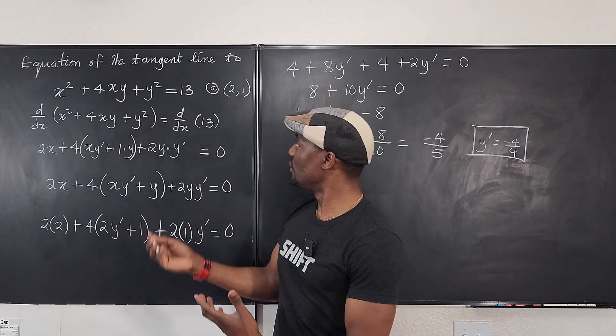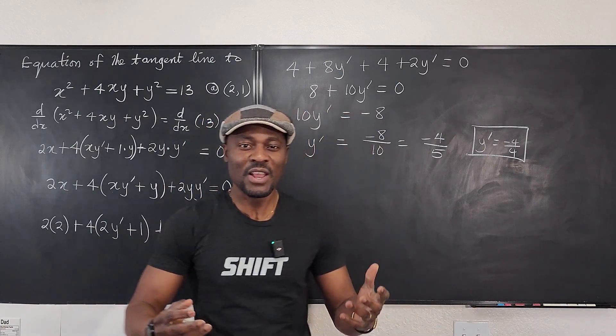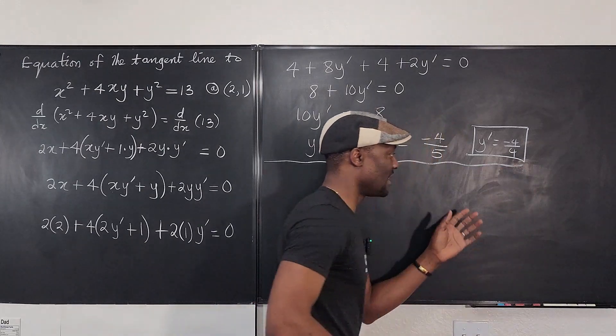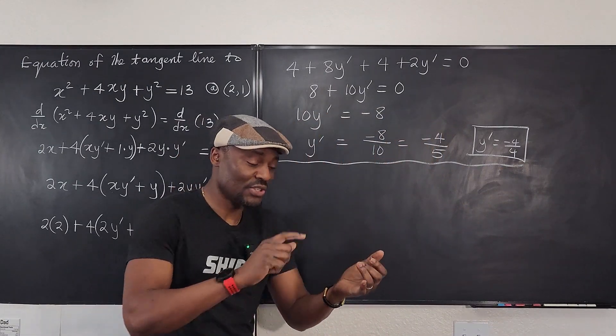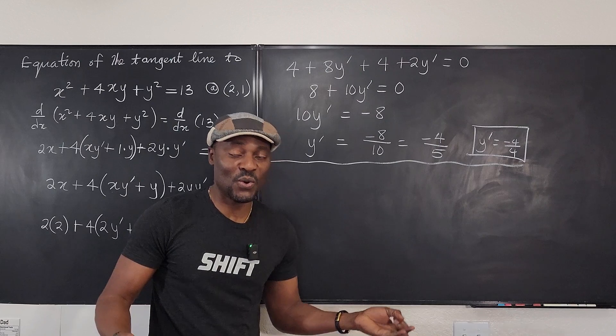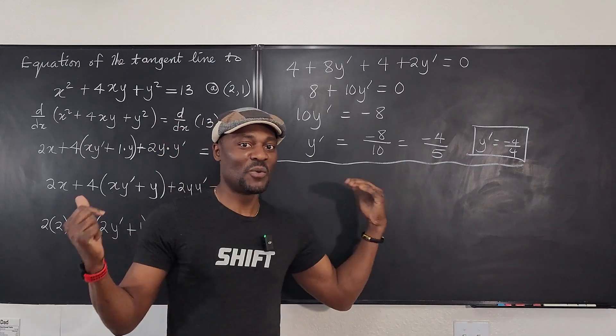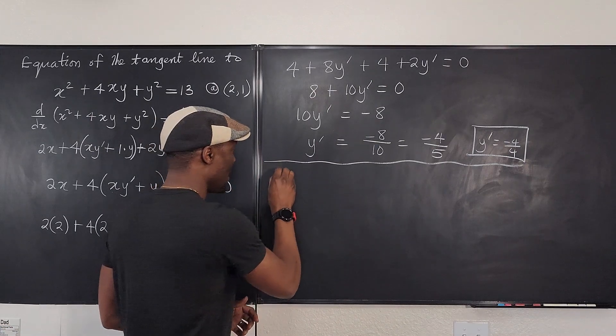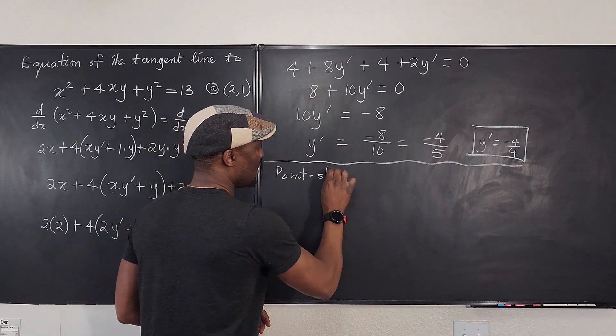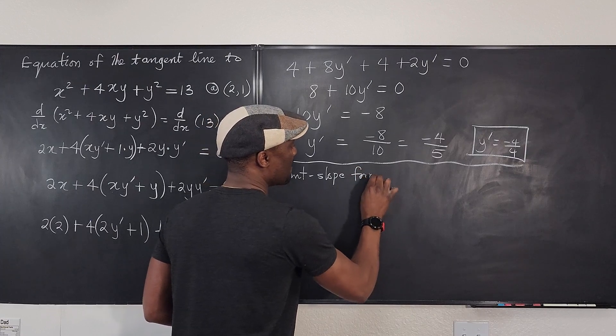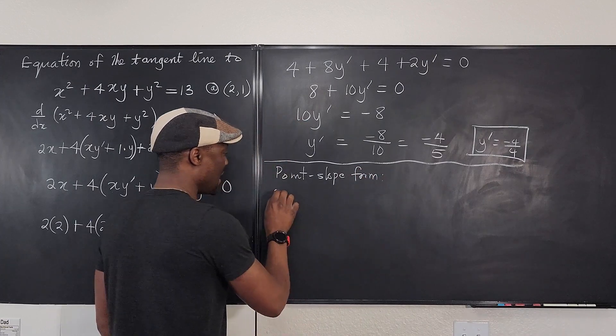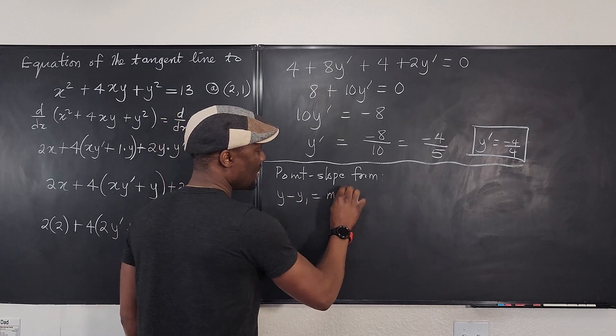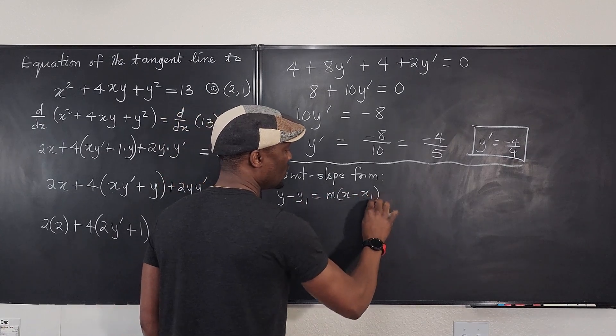So now we need to just find the equation of a tangent line. Remember, it's easy. Anytime you want the equation of a tangent line, you just need a point and the slope or you need the y-intercept. But we're not doing the intercept thing here. Let's just do the point-slope form. So the point-slope form says that y minus y1 equals m times x minus x1. So the question is, what do we know? What do we need?